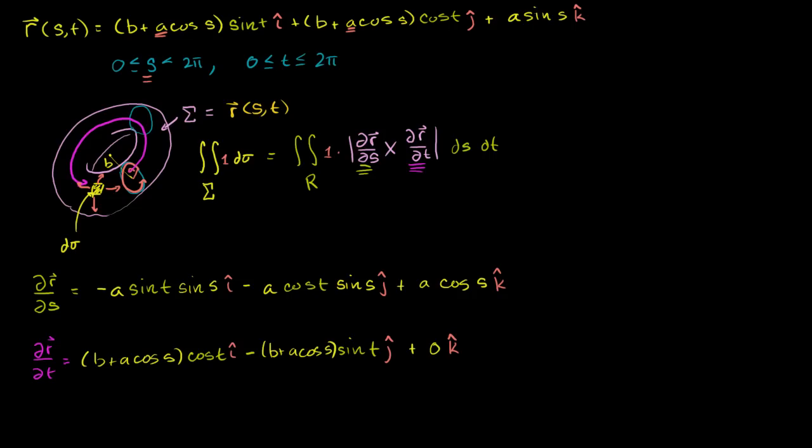That gives us our partial derivatives. Now we have to take the cross product, find the magnitude of the cross product, and then evaluate this double integral — and I'll do that in the next couple of videos.